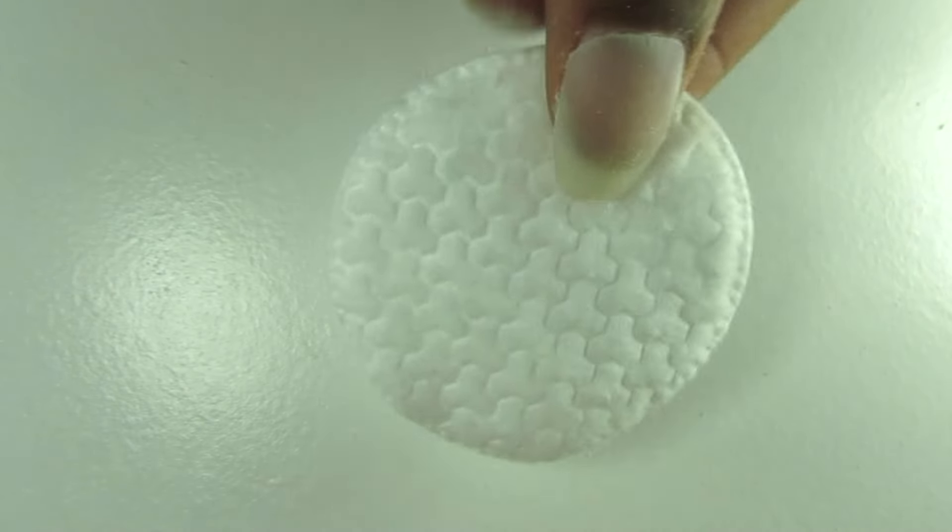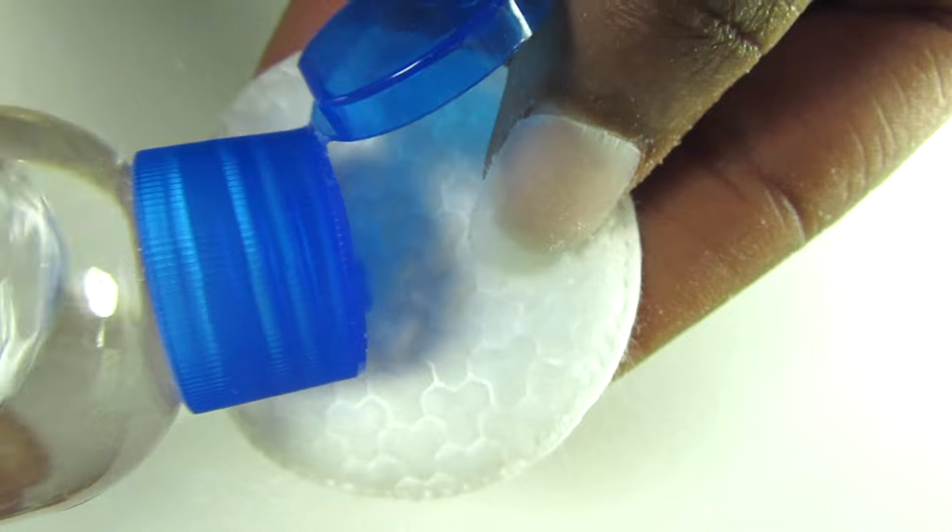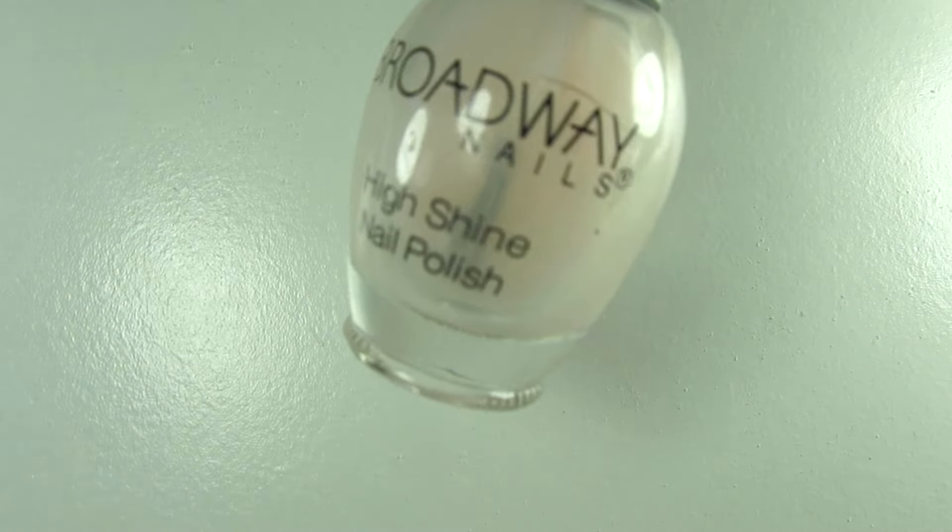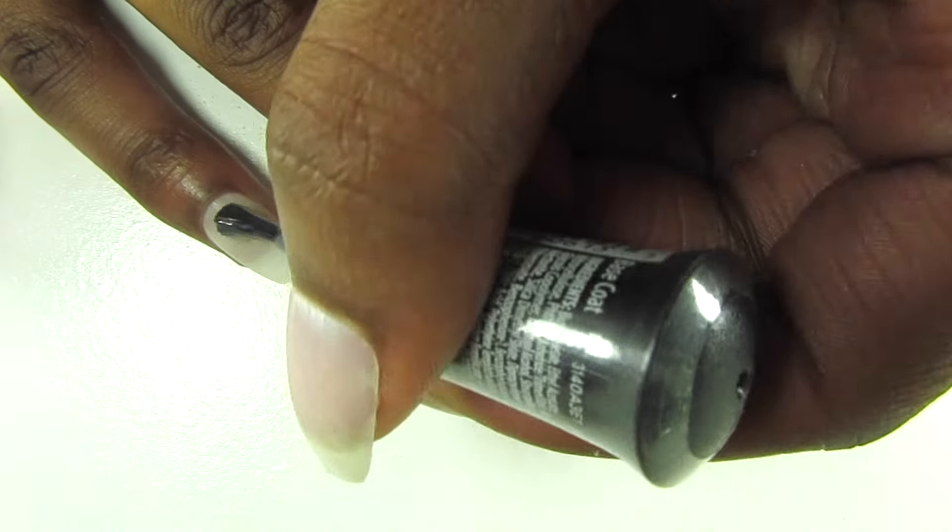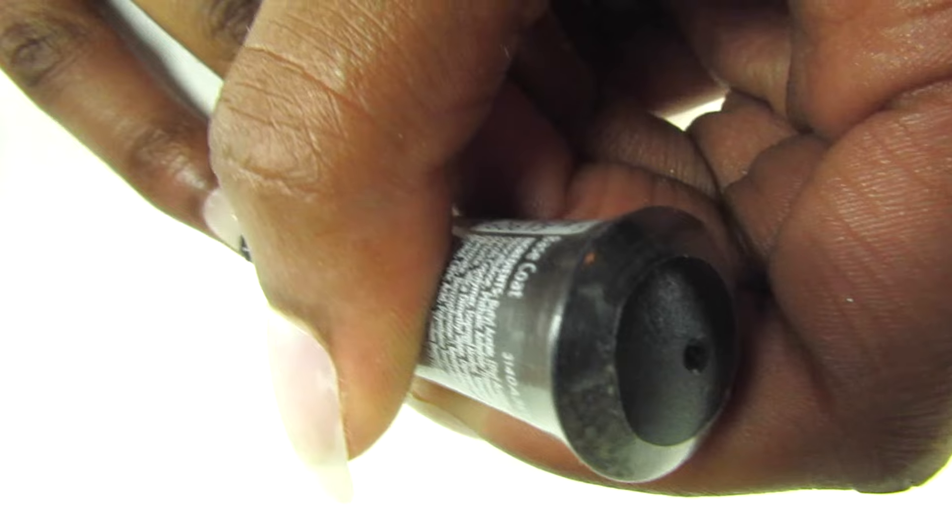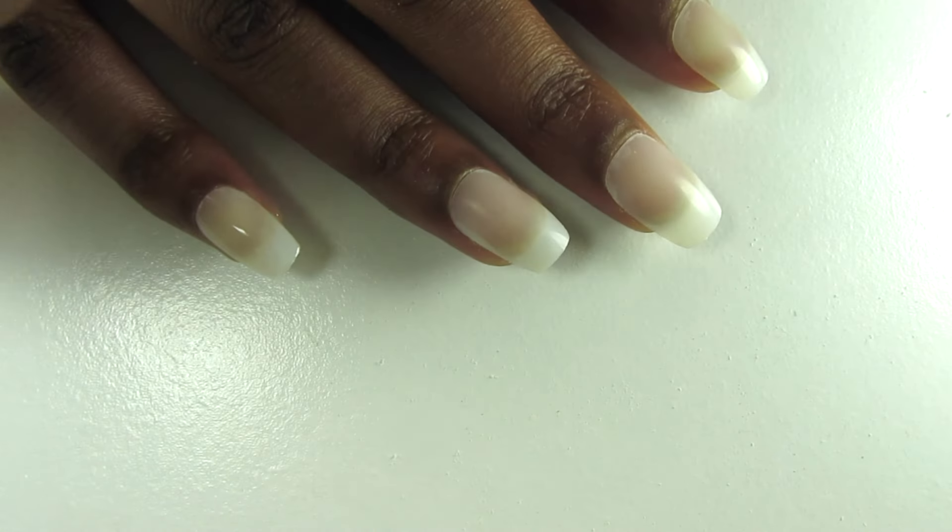Here I'm just taking some rubbing alcohol and a cotton pad and I'm wiping all the little dust and filings from filing my nails and cleaning that off. Now I'm taking my base coat, this is just one I got from Dollar General, and I'm going to coat all of my nails with that so my polish adheres longer.